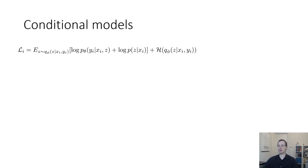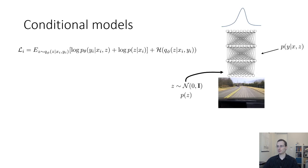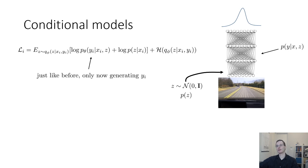We can also train conditional models with variational autoencoders. If you have a conditional model, you are mapping x to some output variable y, and you'd like p of y given x to be a fairly complex distribution. We use the same intuition: p of y given x might be complex, but p of y given x, z will be simple. So the decoder gives us y given x and z, and the encoder gives us z given x and y — now we're generating y and everything is conditioned on x.